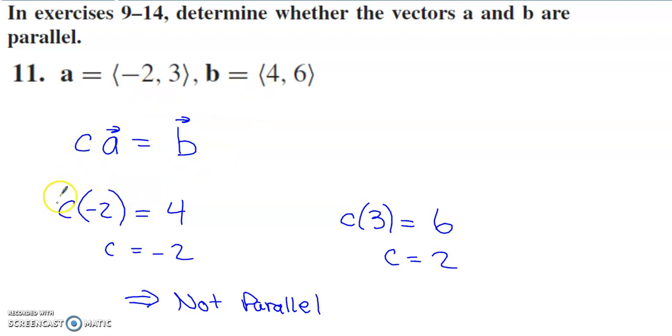So this constant c that I don't know the value of yet—if I'm multiplying this x component by something to generate this x component, I can set up this equation, or just do it in my head. You need to multiply negative 2 by negative 2 to generate 4. So if these vectors are scalar multiples of each other, to generate the new x component from the initial x component, c would have to be negative 2.